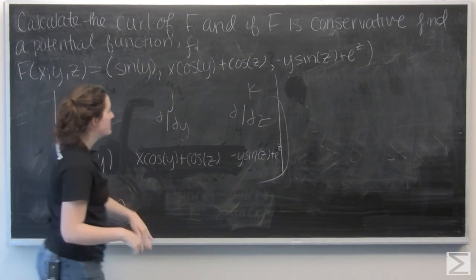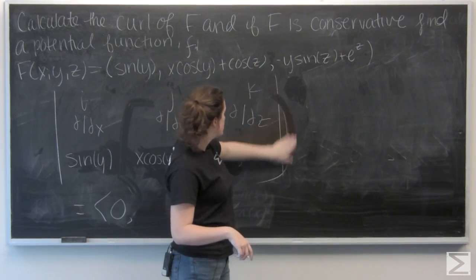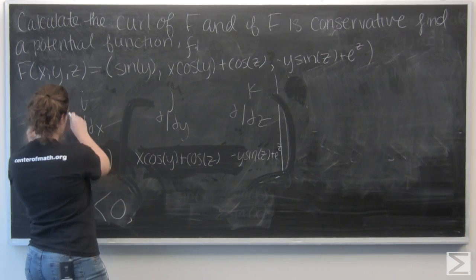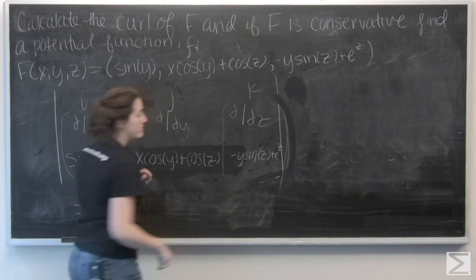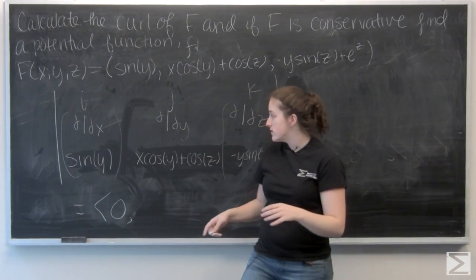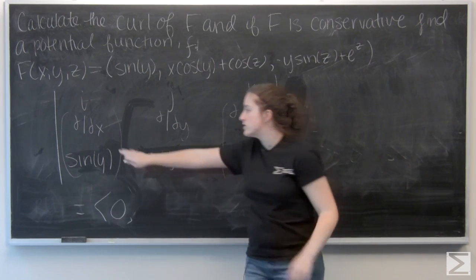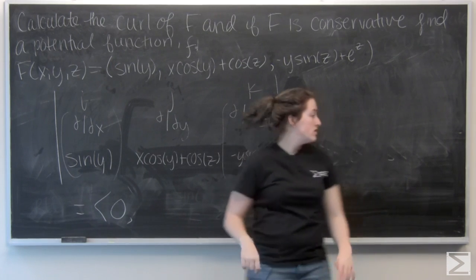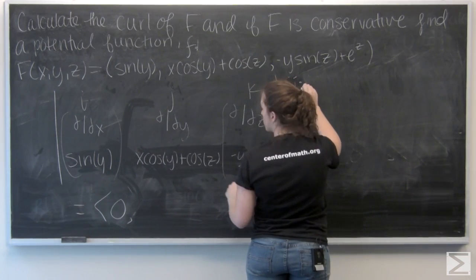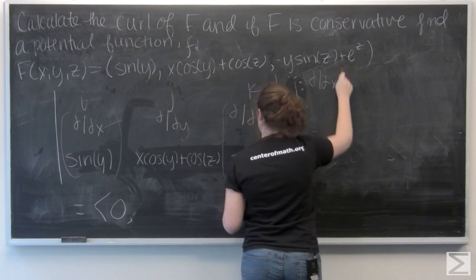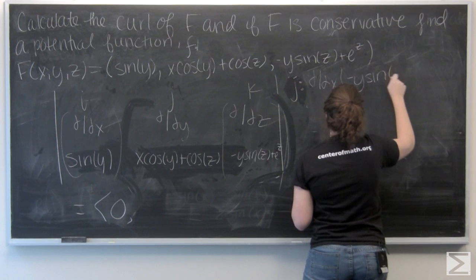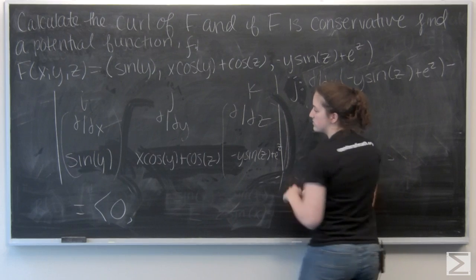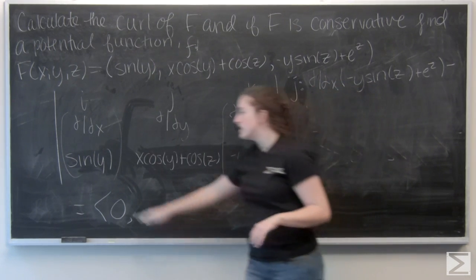Let's go ahead and do j. I'm going to cut the middle column and the top row and take the determinant of this 2 by 2 matrix. The first thing I'm going to have is the product of the main diagonal — ddx times negative y sine of z e to the z. And then I'm going to subtract the other diagonal, which is ddz of sine of y.